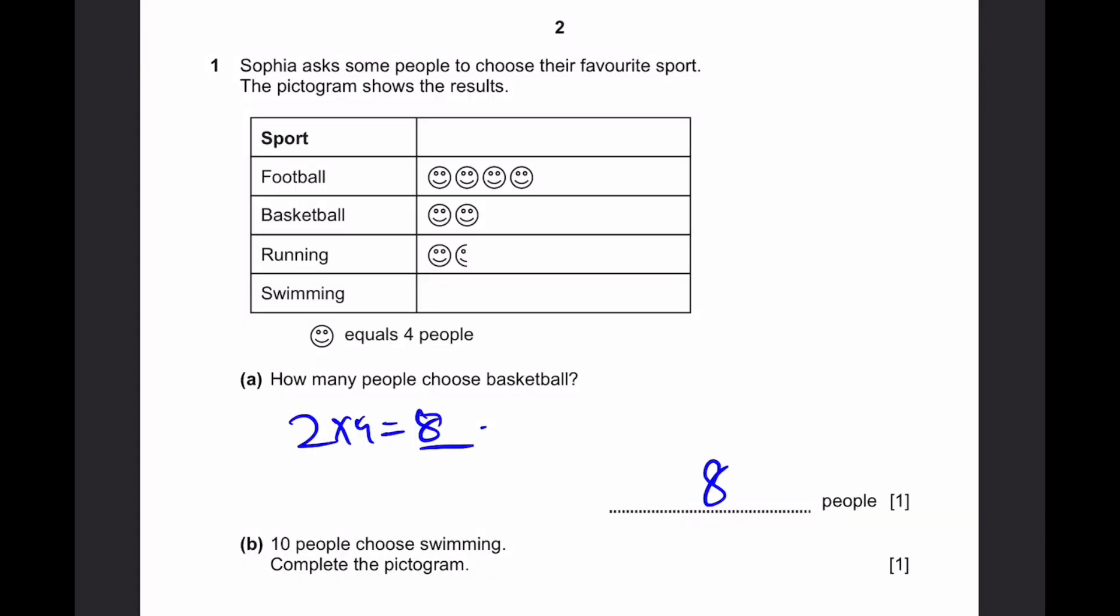Part B: 10 people chose swimming. Complete the pictogram. 10 people, if we divide by 4, we get 2.5 smileys, right? So we just draw 1, 2, and a half like that. That's the answer.